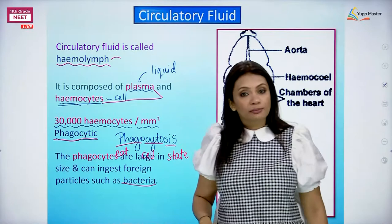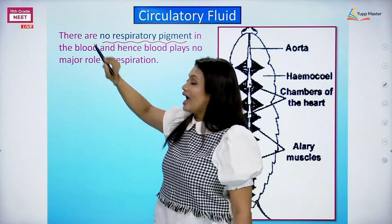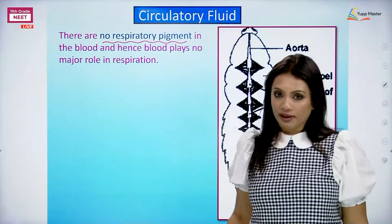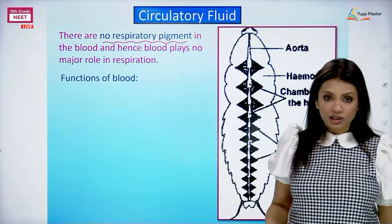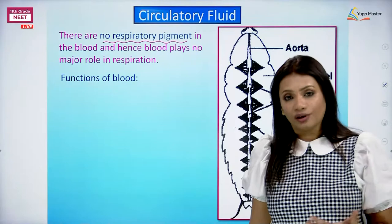Just as we saw, there is no respiratory pigment - there is no hemoglobin - and that is why blood has absolutely no role in respiration. Blood has no role in respiration, but what exactly are the functions of blood? We saw some basic functions at the beginning of the lecture where blood does the work of transportation of nutrition, waste, and hormones. Let's see that in detail.